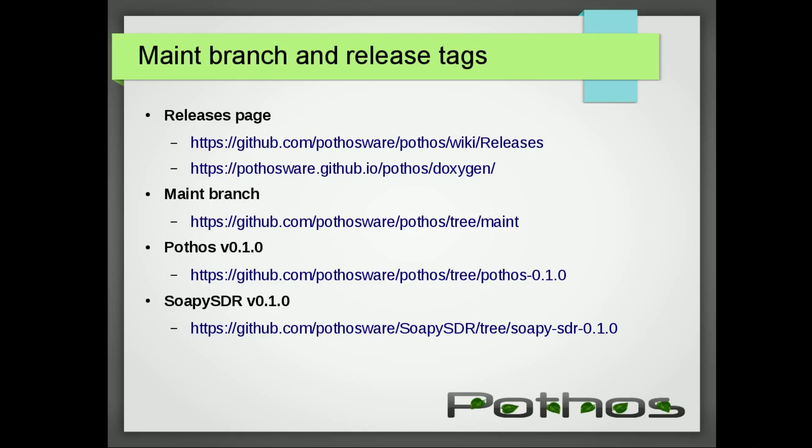We have a new wiki page called Releases to track releases and change logs. The GitHub.io site has been reorganized to have version-generated Doxygen documentation. We've also tagged the SoapySDR project, which is a sister project, with the same release version. In the future, SoapySDR and the Pothos SDR toolkit will continue to grow together and gain new features.